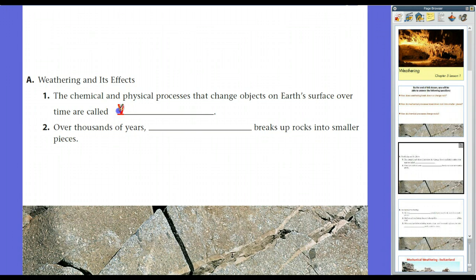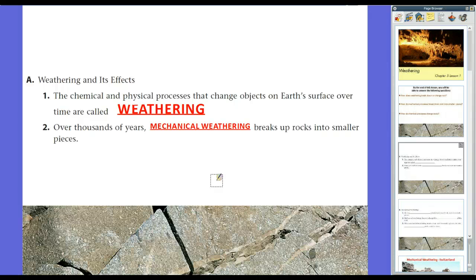As a result, things on Earth will go through physical and chemical changes. And this is what we call weathering. The physical and chemical processes that change objects on Earth's surface over time are called weathering. And over thousands of years, we're going to talk about the first type. This is mechanical weathering.